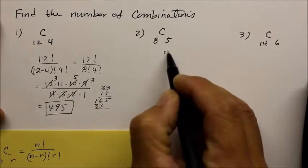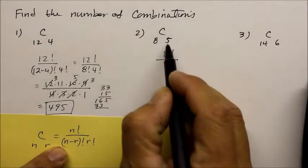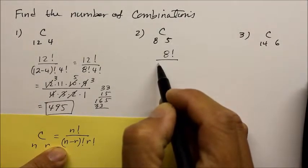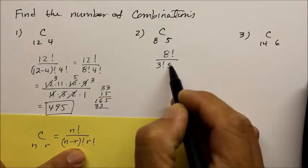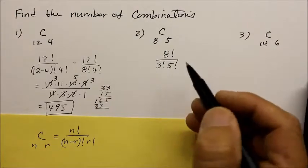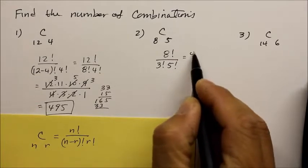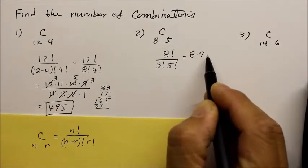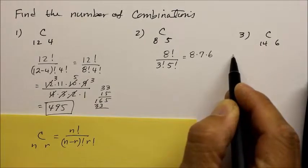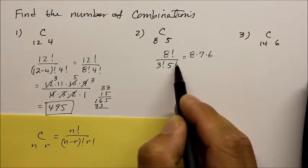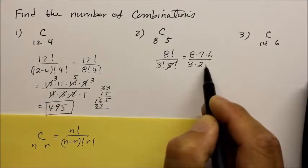So that's going to be 8 factorial over the 8 minus 5, which is 3 factorial, times that r object, 5 factorial. And let's break it down. 8 factorial is like saying 8 times 7 times 6. But I'm not going to write any more after that, because that 5 is going to reduce that out. So what's on the bottom then? It's 3 factorial: 3, 2, 1.